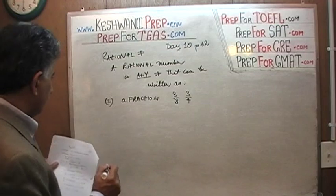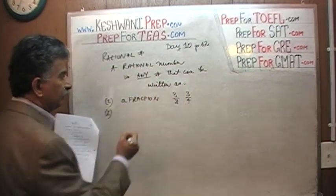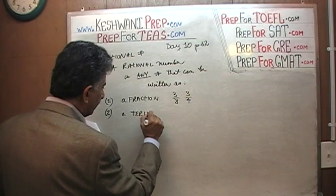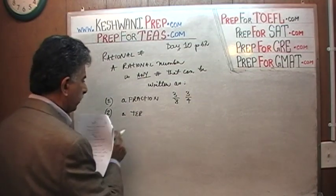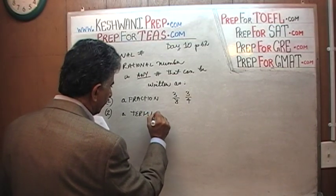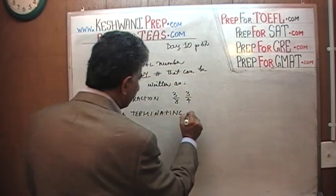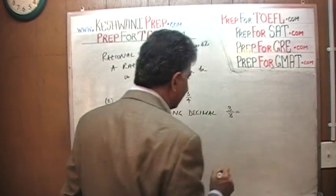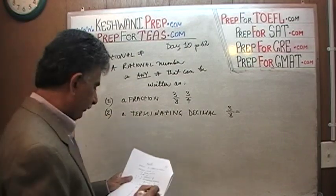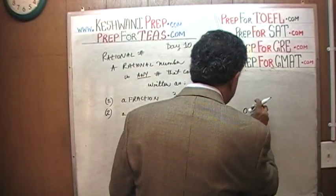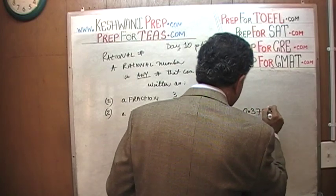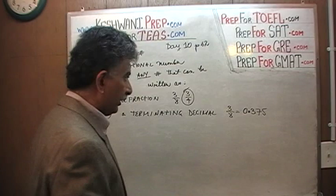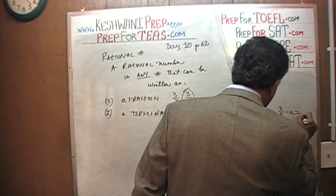Let's first understand rational numbers. Another way to look at a rational number is that it's any number that can be written as a terminating decimal. For example, the reason why three-eighths is a rational number is because three-eighths can be written as 0.375 — and that's it, it ends there. The reason why three-quarters is a rational number is because it can be written as 0.75 — and that's it, it ends there.